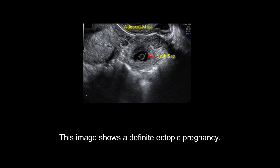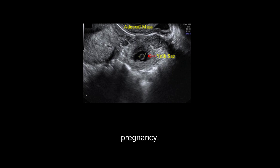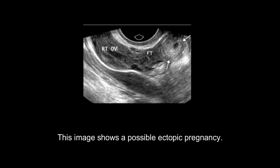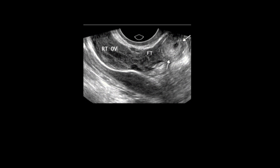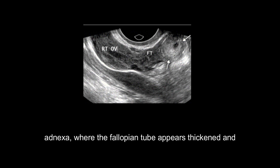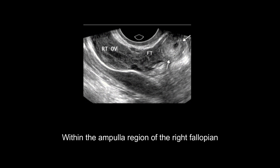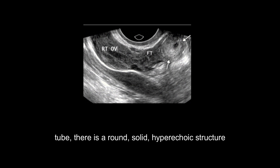This image shows a definite ectopic pregnancy. Note the adnexal mass with a yolk sac, which is a definitive diagnostic sign for ectopic pregnancy. This image shows a possible ectopic pregnancy. It depicts a grayscale ultrasound of the right adnexa, where the fallopian tube appears thickened and heterogeneous. Within the ampulla region of the right fallopian tube, there is a round, solid, hyperechoic structure that has a central cystic component.